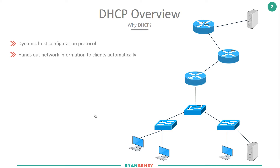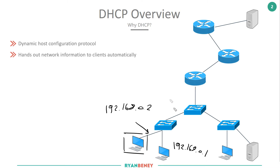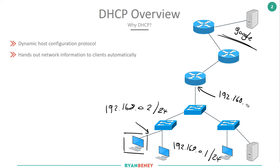So far we've talked a lot about LAN switching, routing, and networking fundamentals, but we haven't talked about what actually happens when someone comes along and plugs something into our switch. How does this PC know it should be 192.168.0.2, and how does another PC know it should be 192.168.0.1, in a slash 24 subnet, with a default gateway of 192.168.0.250? All of this is given to them in a production network by DHCP, the Dynamic Host Configuration Protocol.